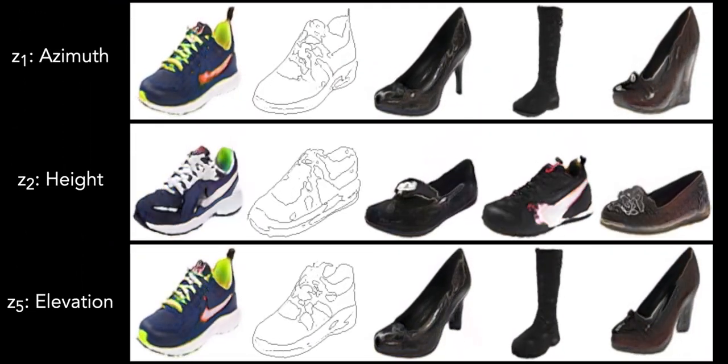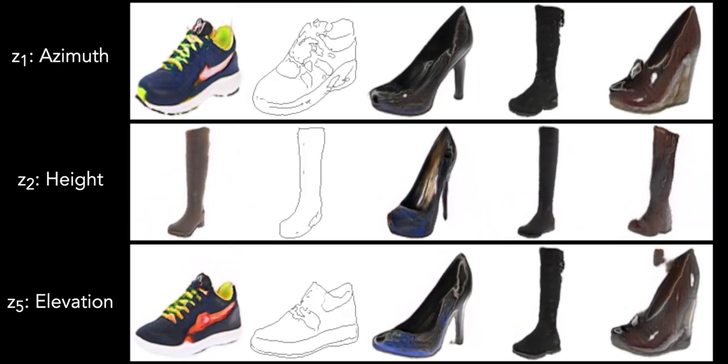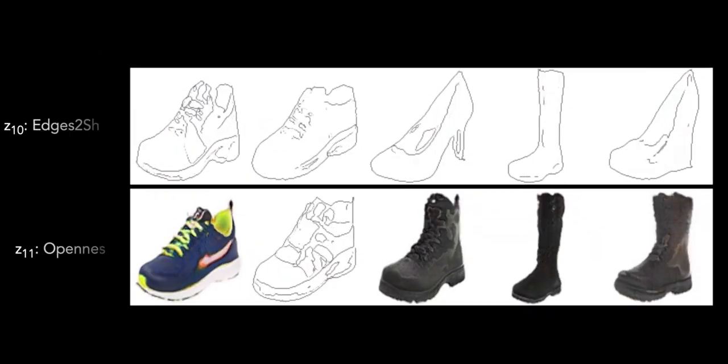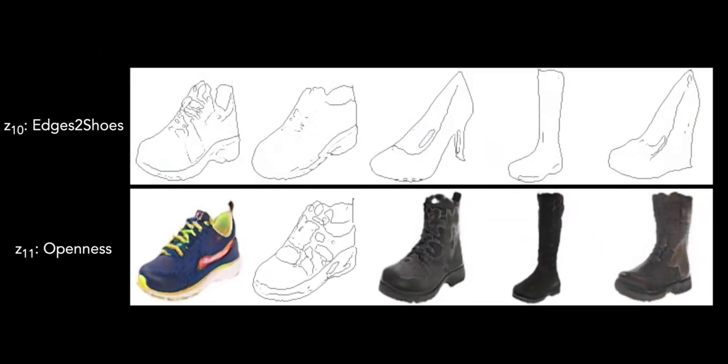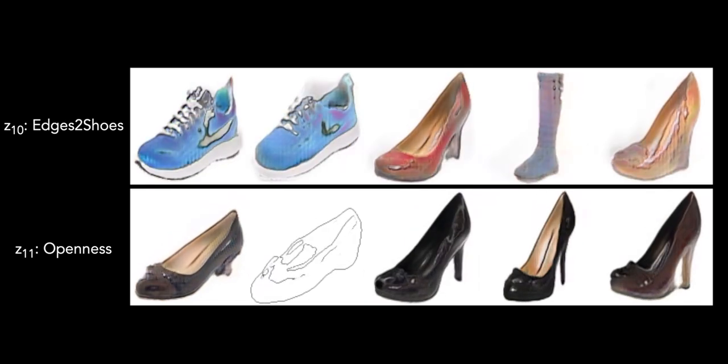Here we show a bunch of components learned by a progressive GAN trained from scratch with the Hessian penalty as a regularizer. In addition to the edge-to-shoe component, it disentangles factors like azimuth, height, elevation, and openness.